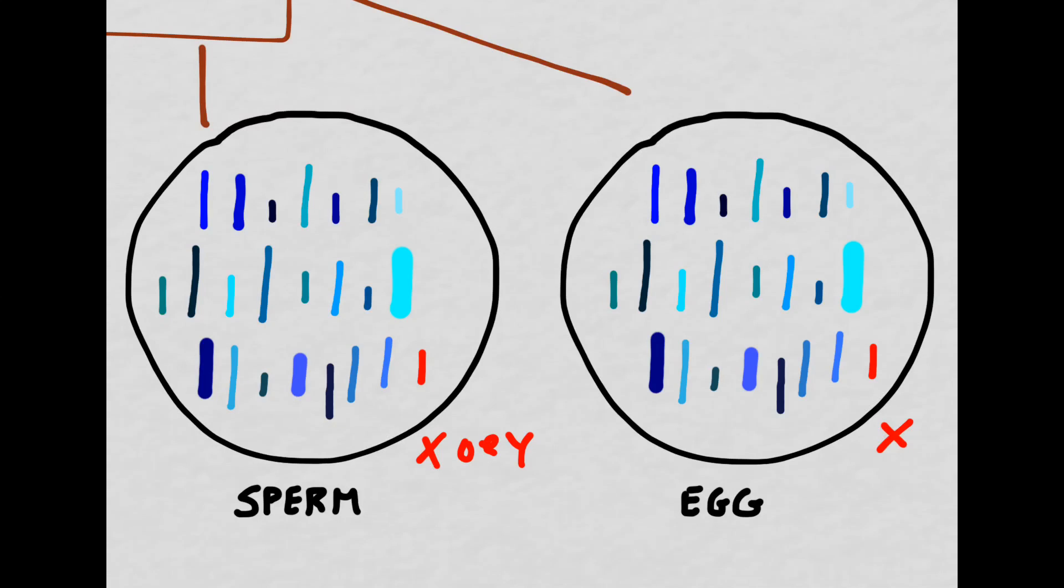Depending on which variety of the 23rd chromosome this particular sperm cell has, it will determine whether or not the resulting zygote is going to be male or female. If the sperm cell has an X chromosome as the 23rd chromosome, the resulting zygote will be female. If it's a Y chromosome, however, the resulting zygote will be male.